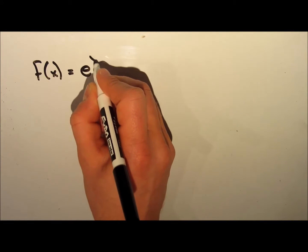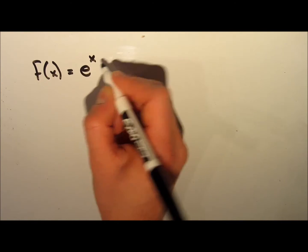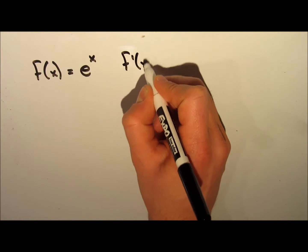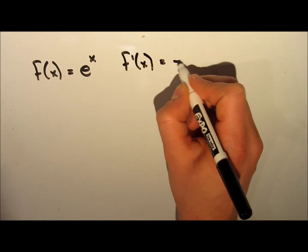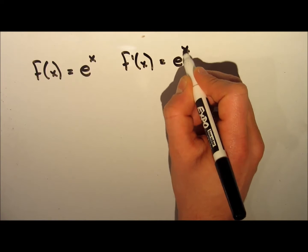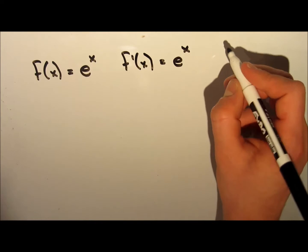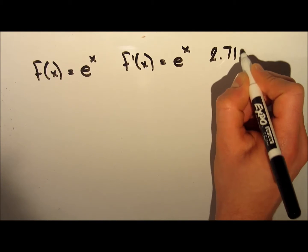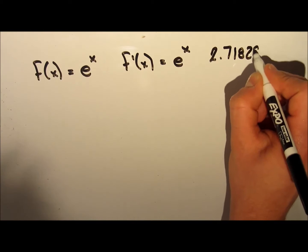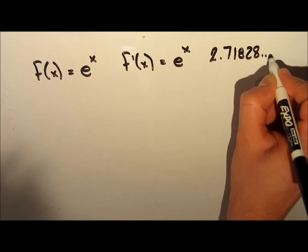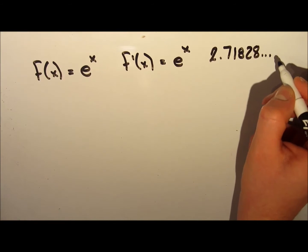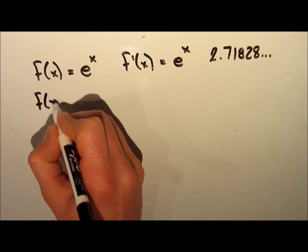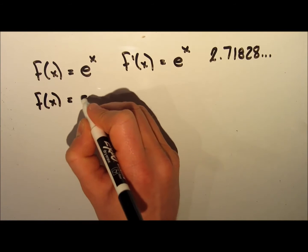The easiest derivative to take is the function f(x) = eˣ. The derivative of this function is just eˣ — it's the same thing. The e we're talking about here is the mathematical constant e, which is equal to 2.71828 and goes on and on, kind of like pi.